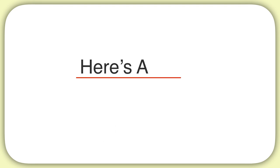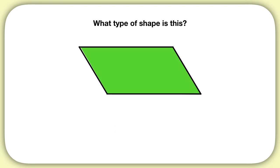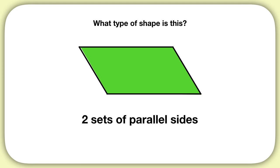Here's another problem to practice with. What type of shape is this? How many sets of parallel sides does this shape have? This shape has two sets of parallel sides, here and here. Does this shape have right angles? No, this shape has no right angles. And are all of the side lengths the same? No, you can see that the sides are different lengths.